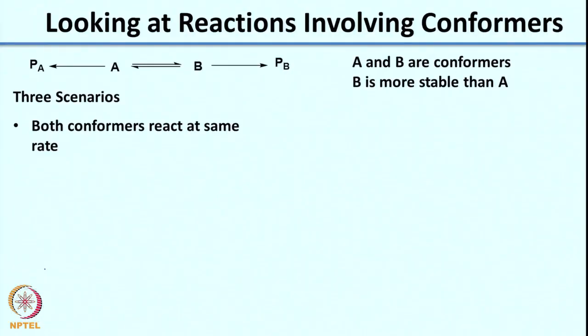Some conformations are more stable than others. We will look at a scenario where you have two conformations of the same molecule - conformer A and conformer B - where conformer B is actually more stable than conformer A. What I want you to do is draw a reaction coordinate diagram showing the relationship between A and B, and then show the formation of products PA and PB on the same diagram.